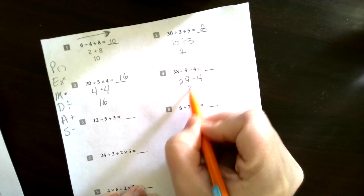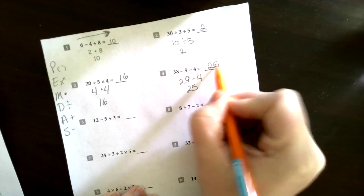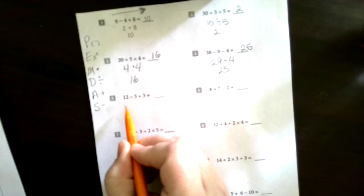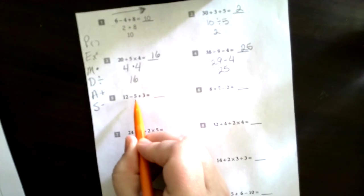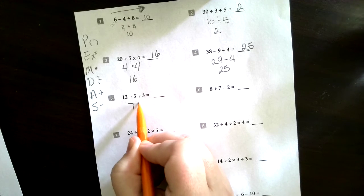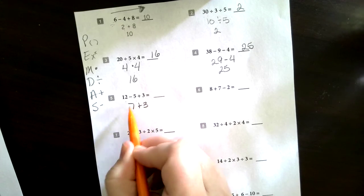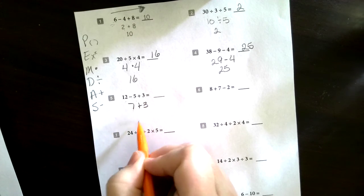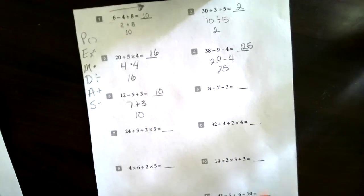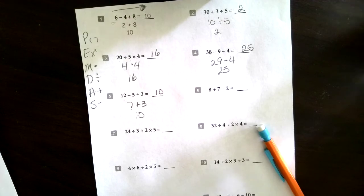This next one, 12 minus 5 plus 3. Well, 12 minus 5 is 7, plus the 3. Then we do the addition, 7 plus 3 is 10. There you go. All right, those are the problems you're going to be working in Echo.